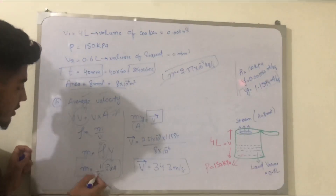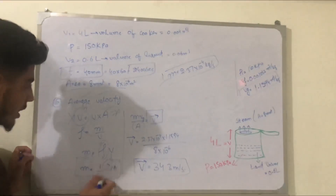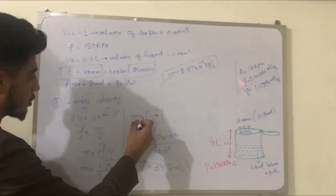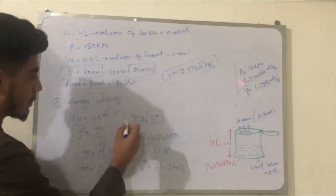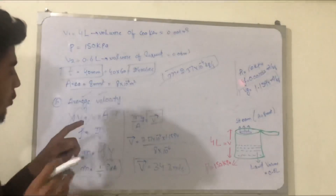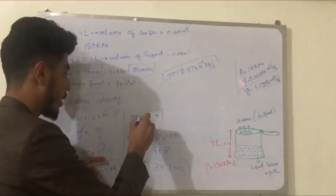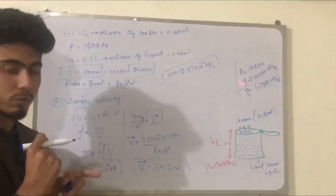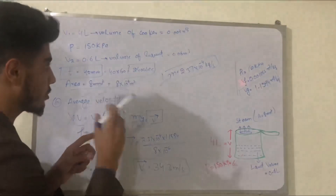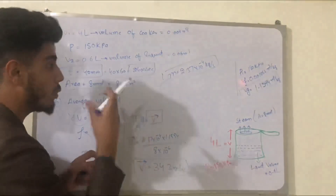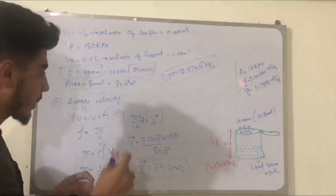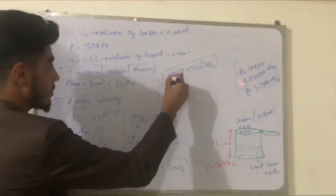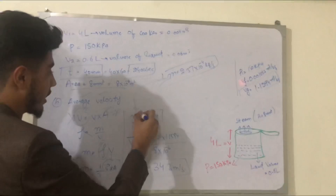The average velocity equals mass flow rate multiplied by specific volume of the vapor (vg), divided by area. We use vg, not vf, because the steam is going from the cooker into the external environment as vapor.